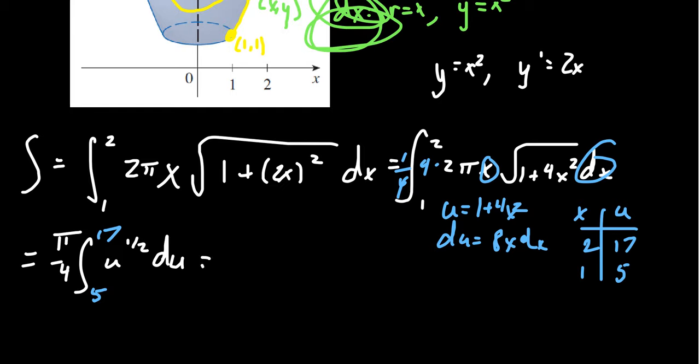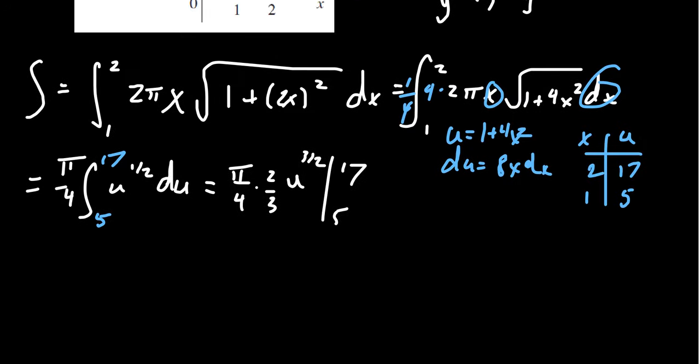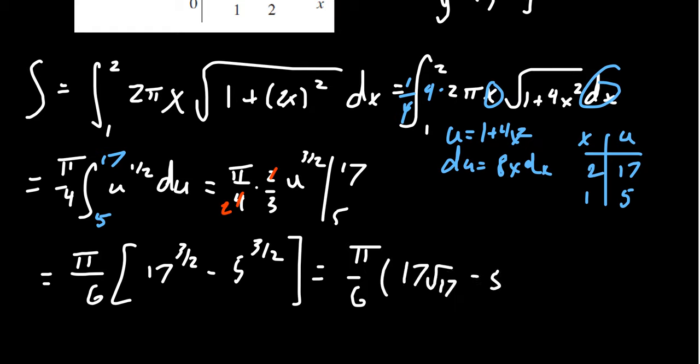Anti-derivative of u to the 1/2. We're going to raise the power, so we get u to the 3/2. Then divide by that power, which is multiply by its reciprocal, 2/3. We integrate from 5 to 17. There's a little bit of cancellation with the coefficients. 2 goes into 4 two times. So we're going to get a coefficient of π/6 in front. And then as we plug in the 17, we're going to get 17 to the 3/2 minus 5 to the 3/2. There's no perfect squares there to simplify.